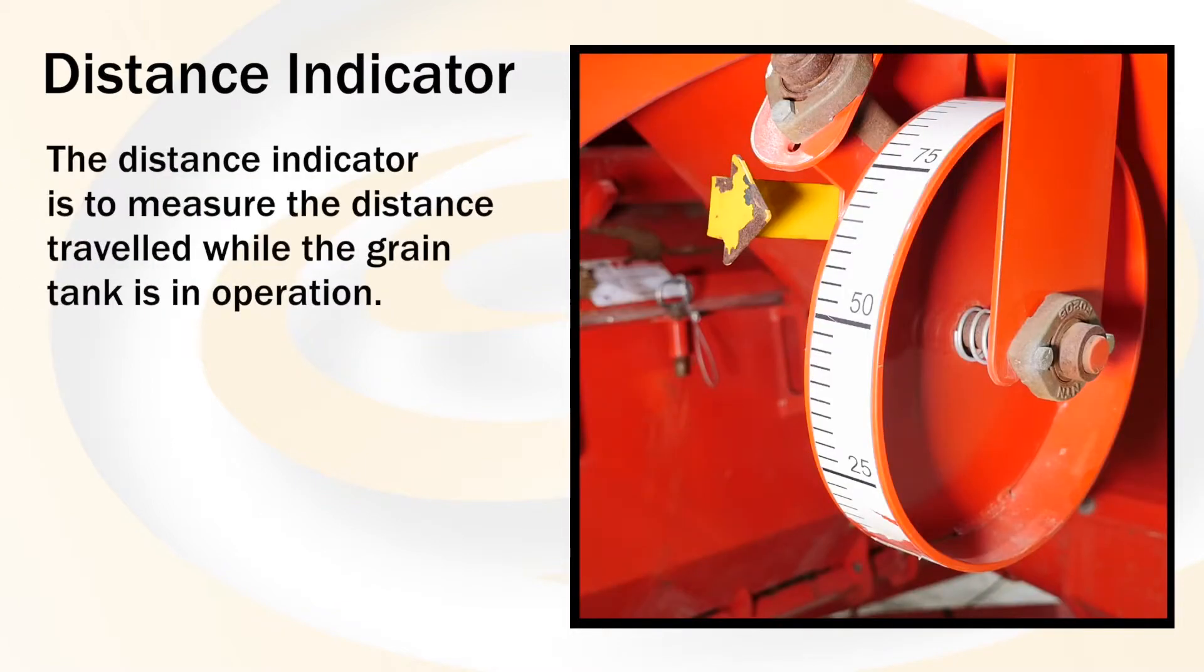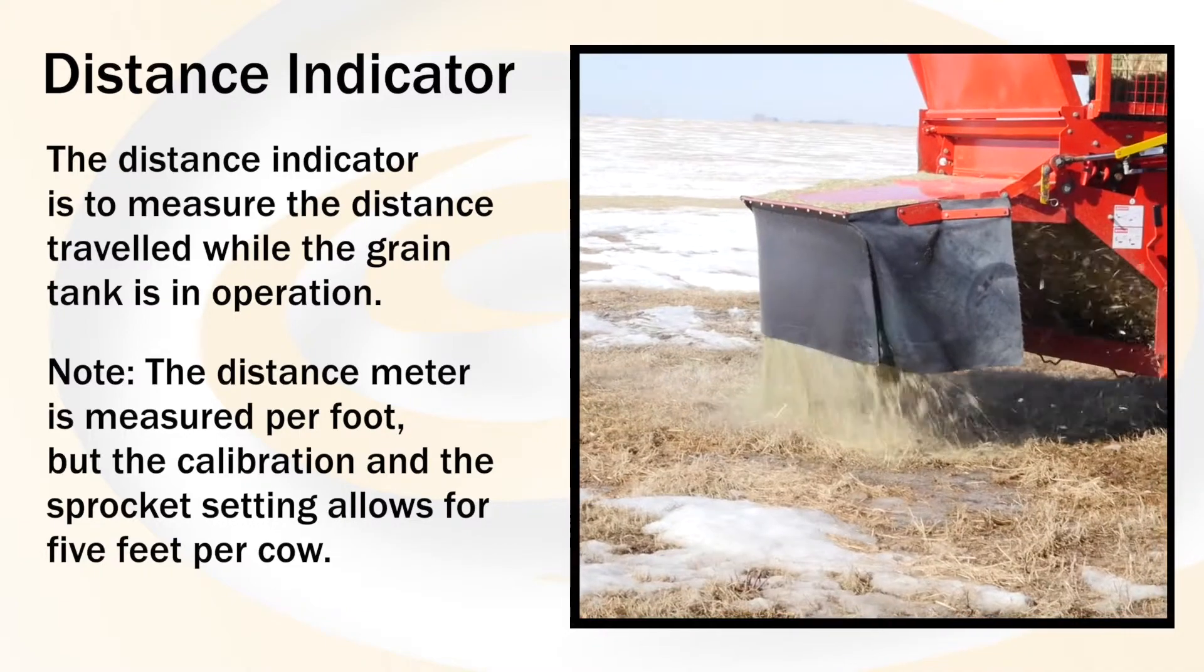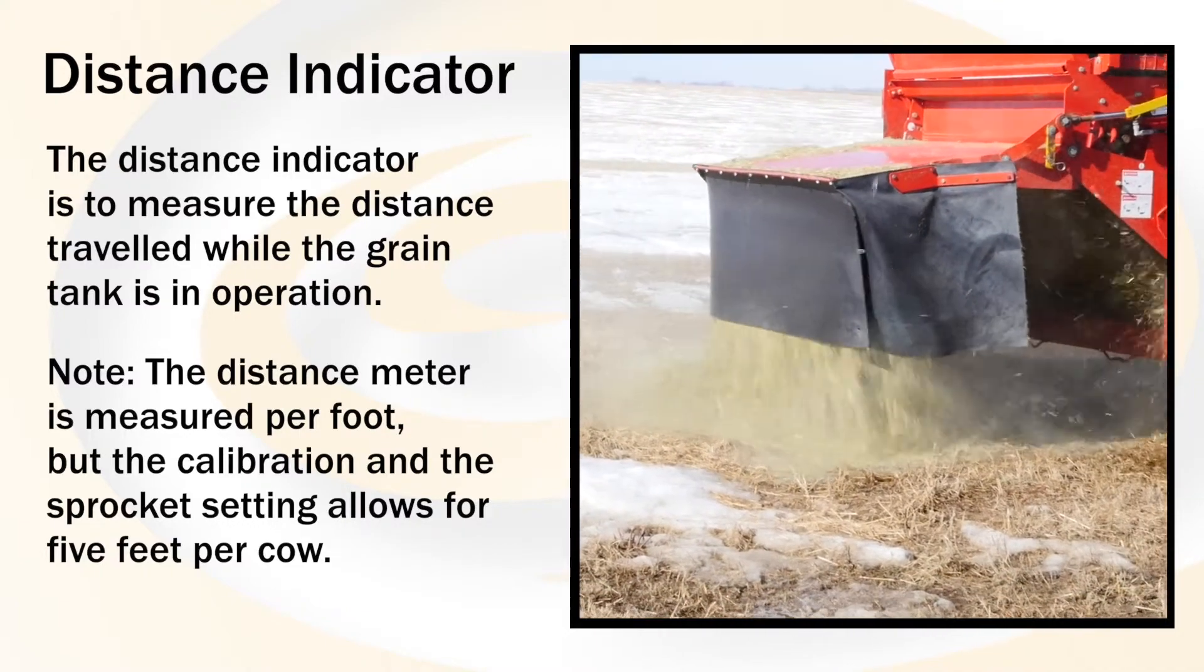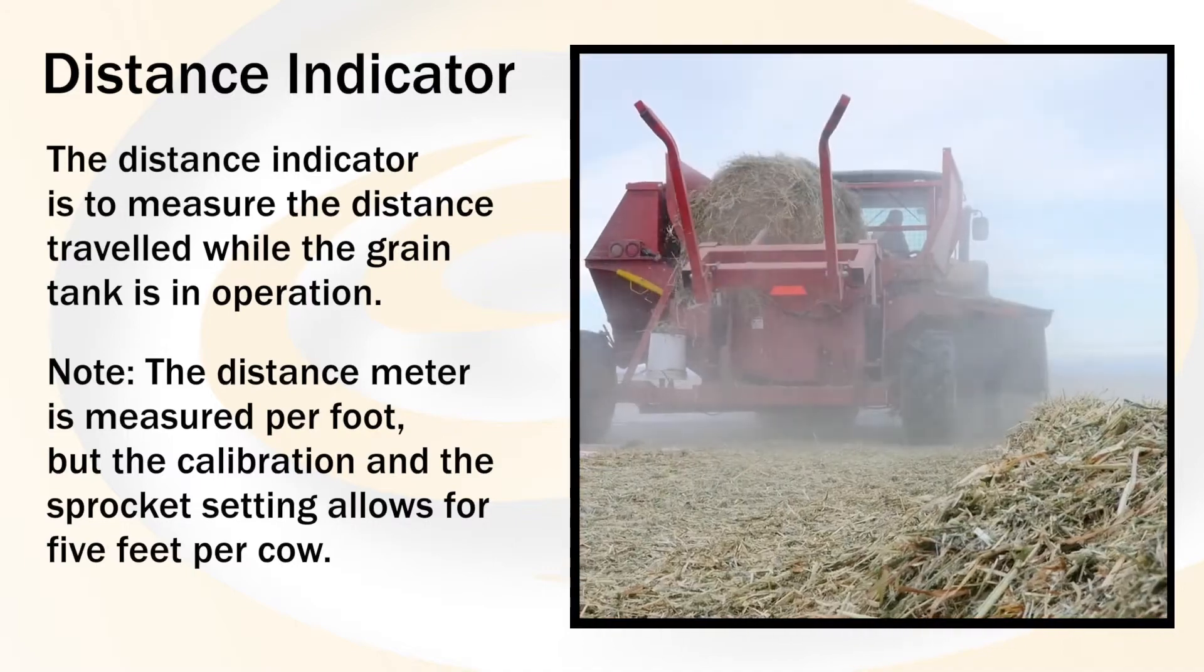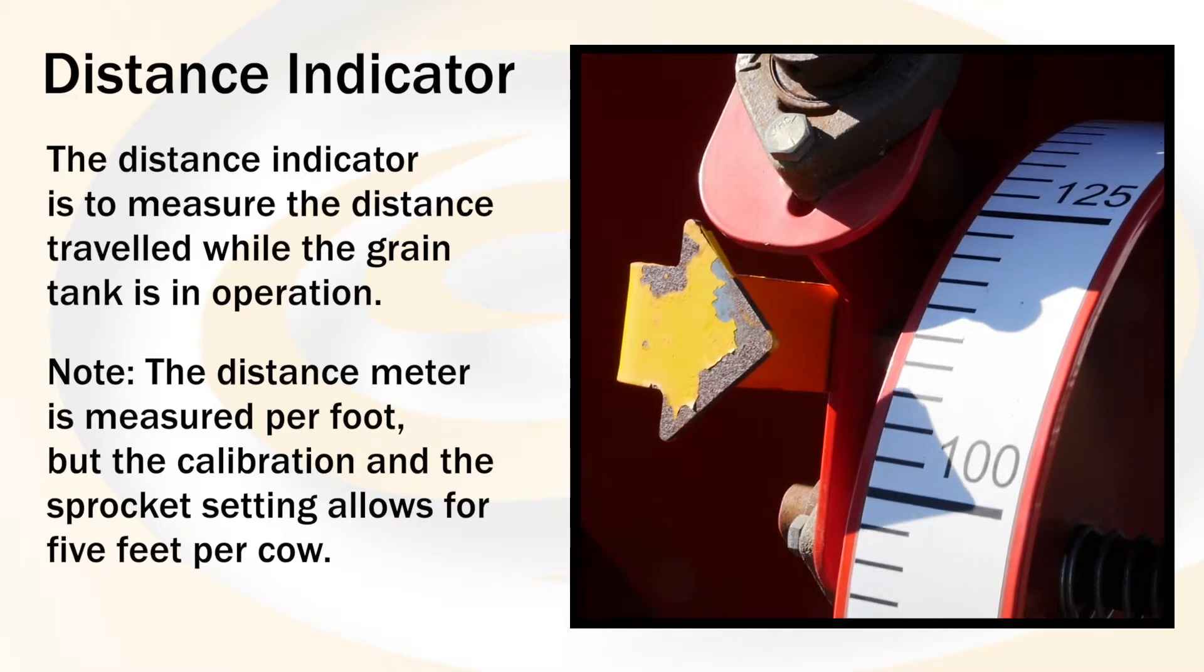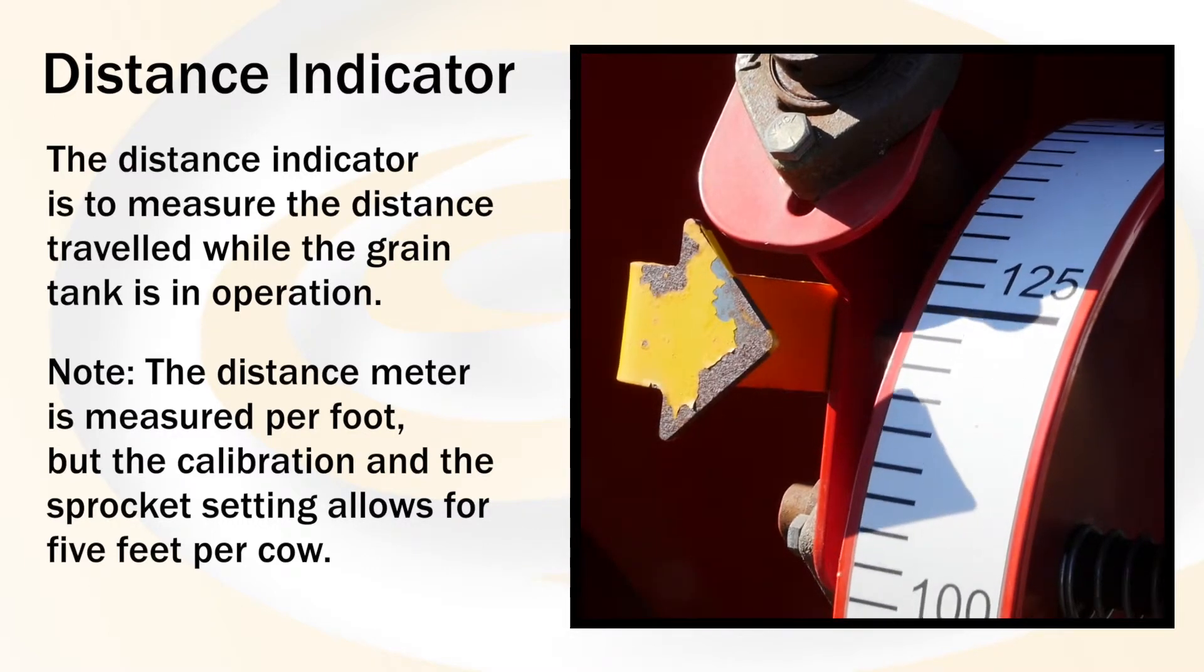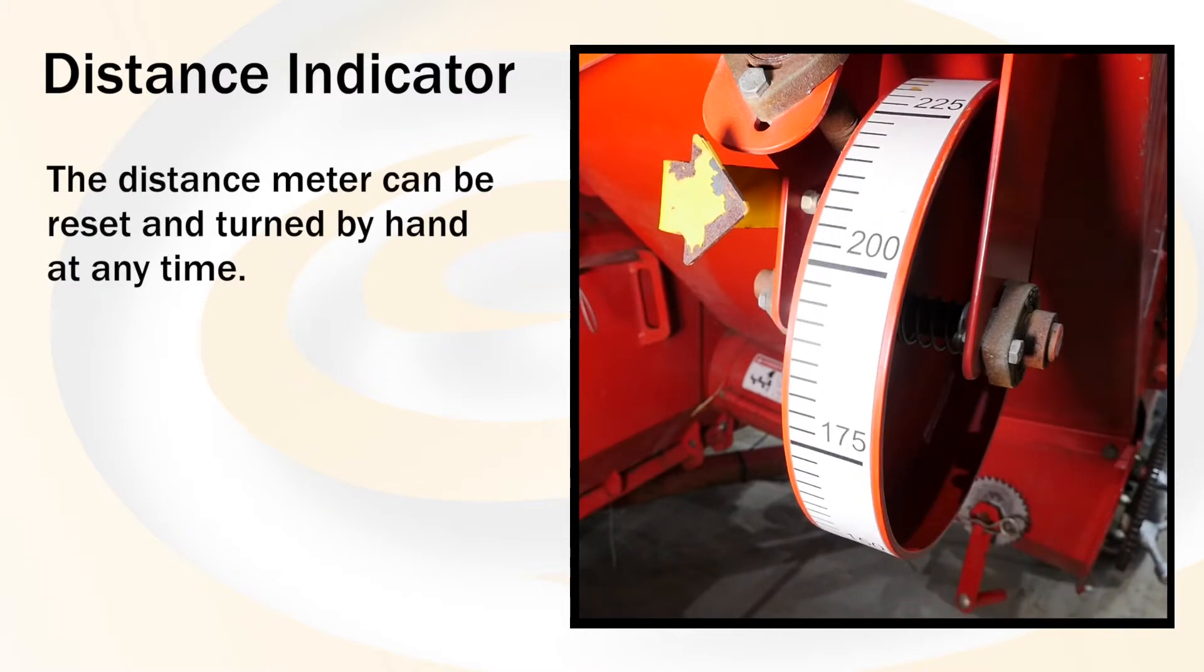The distance indicator is to measure the distance travelled while the grain tank is in operation. Note that the distance meter is measured per foot, but the calibration and the sprocket setting allows for 5 feet per cow. As an example, to be more accurate, 200 feet would be the distance to feed 40 cows. This distance meter can be reset and turned by hand at any time.